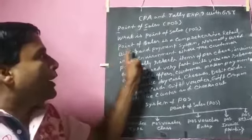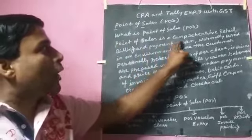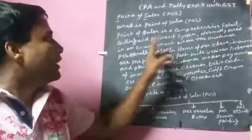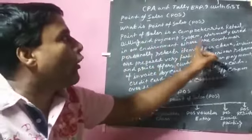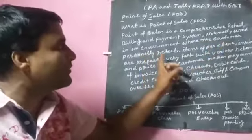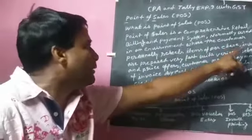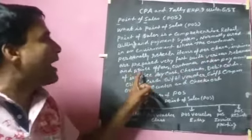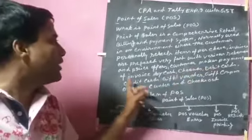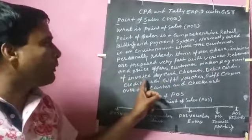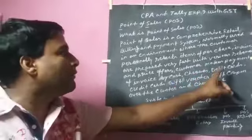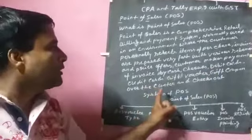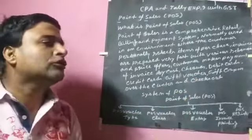Point of Sales is a comprehensive retail billing and payment system, normally used in an environment where the customer personally selects items of purchase. Invoices are prepared very fast with various schemes and price offered. Customer makes payments of invoices by cash, by check, by debit card, by credit card, by gift voucher, by coupons, over the counter and checkout.